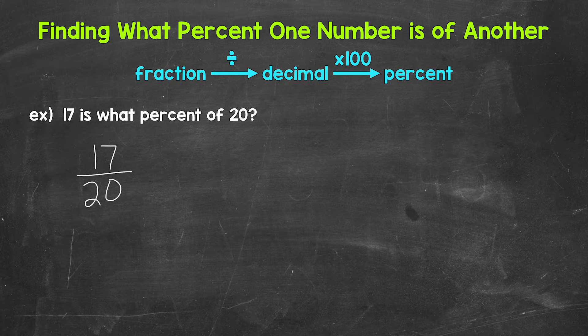Remember, fractions are a way to represent division. We divide the numerator, the top number of the fraction, by the denominator, the bottom number of the fraction. That's going to give us a decimal here. We're going from a fraction to a decimal. So we need to do 17 divided by 20.